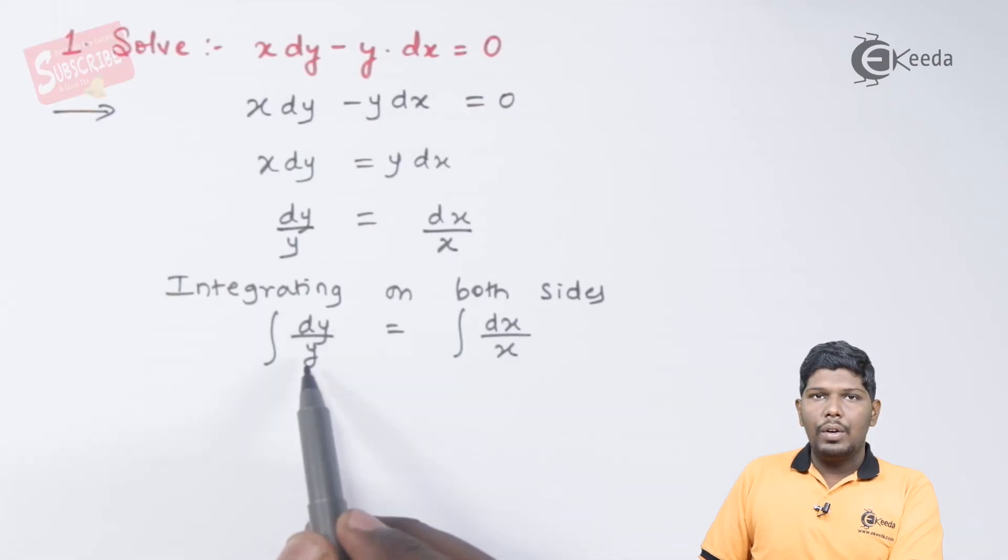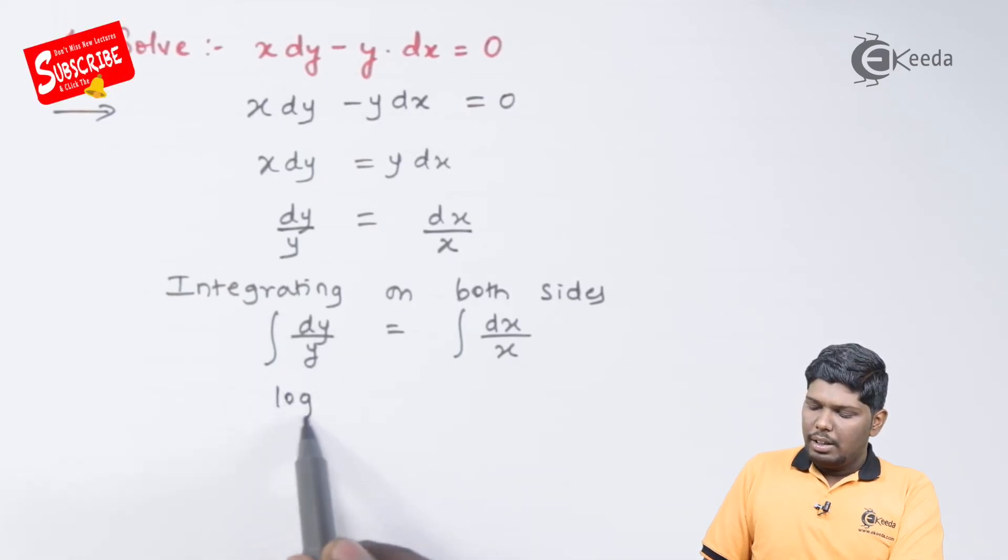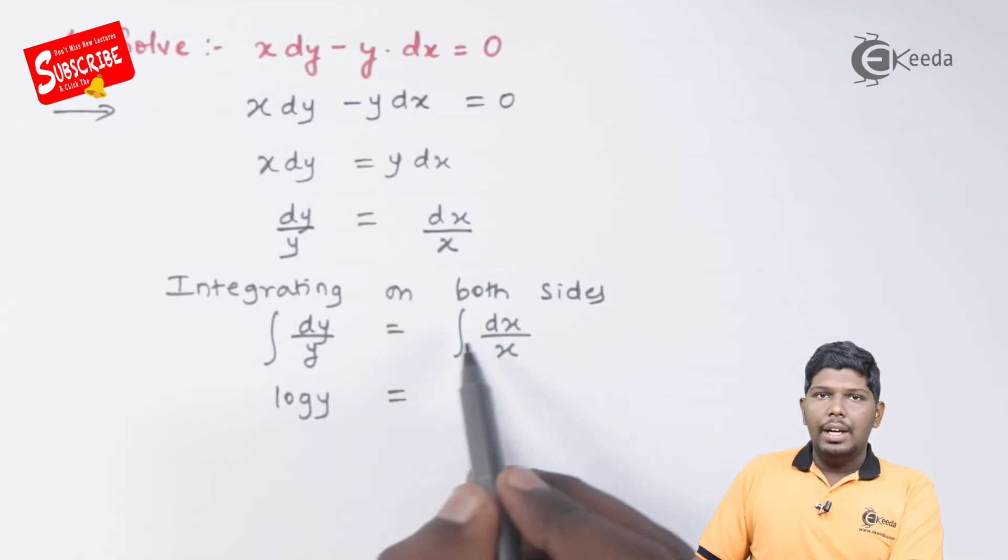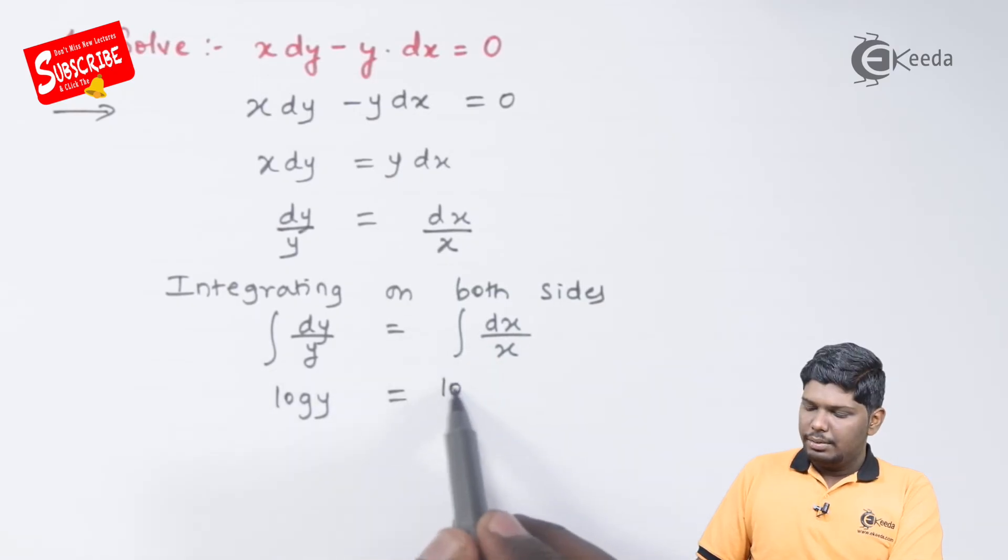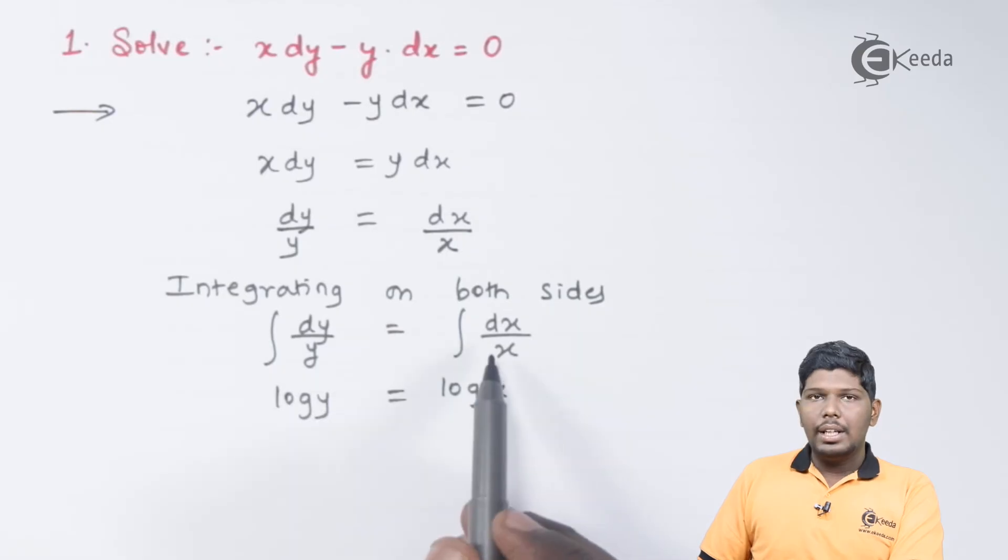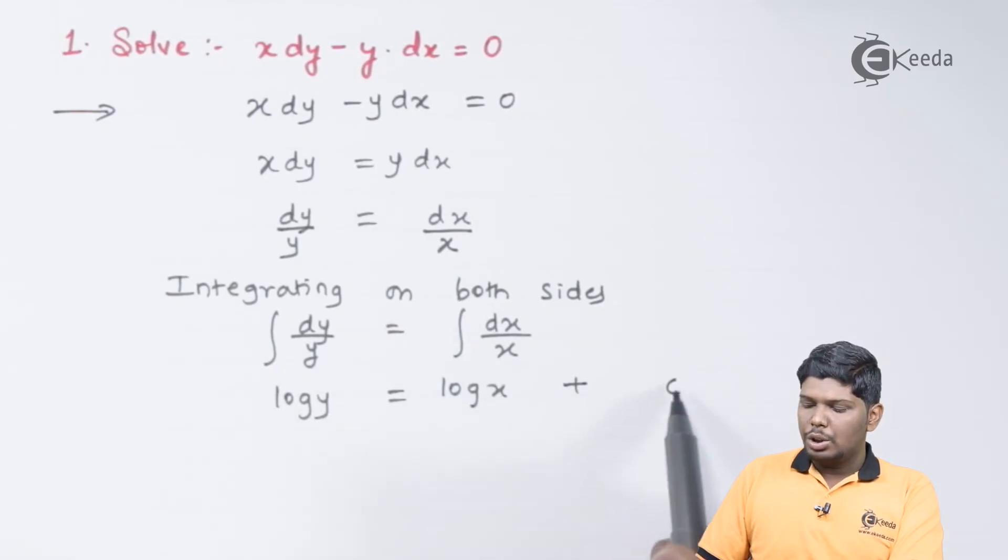This will give you integral dy upon y is equal to integral dx upon x. Now, we know that integral of 1 upon y is log y and integral of 1 upon x is log x. But after integration, we are going to write as a constant.